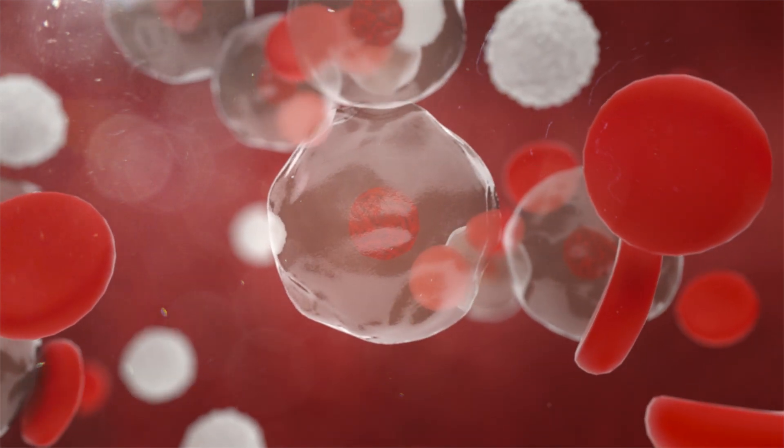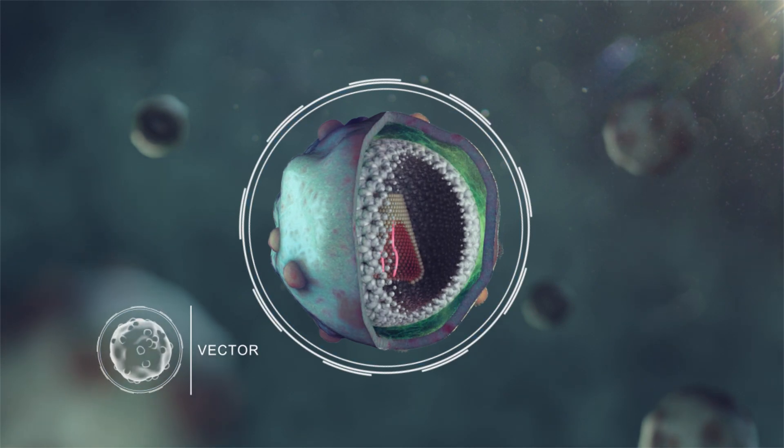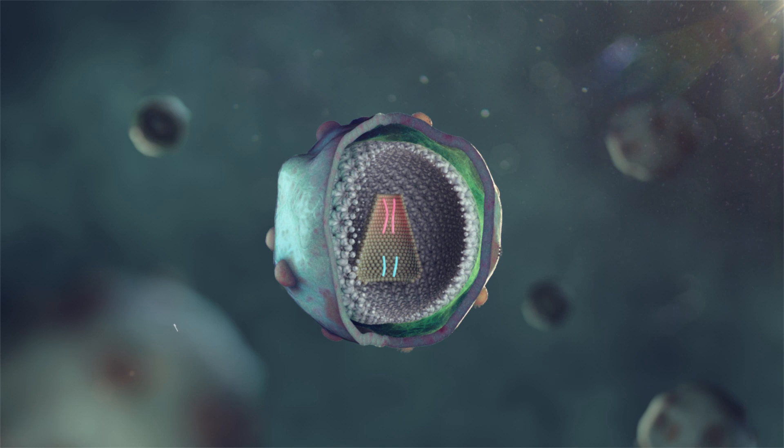These cells are taken from the bone marrow and put in contact with a vector, which contains a functioning version of the adenosine deaminase gene.